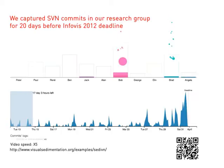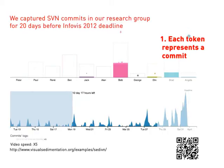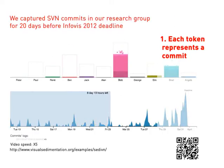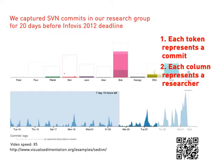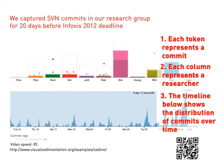Seti SVN is a visualization of commits in our research group for the 20 days before an InfoViz deadline. Each token represents a commit, each column represents a researcher, and the timeline below shows the distribution of commits over time.